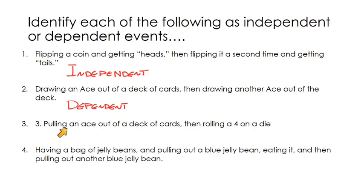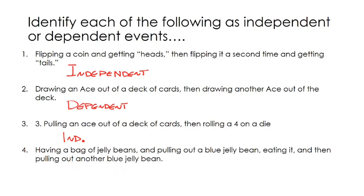Our third example: pulling an ace out of a deck of cards and then rolling a four on a die. Pulling the ace out has nothing to do with what we roll on the die, so those would be independent. On number four, we have a bag of jelly beans. What's the probability I pull out a blue jelly bean and then pull out another blue? If you pull out that first blue jelly bean and eat it, it's not going to be there for the second draw. Removing the jelly bean changes the number in the bag, therefore changing the probability of the second event — so that one is dependent. A lot of your dependent events involve drawing an item out of a deck or a bag, and because you've removed that item, it changes the probability for the second event.